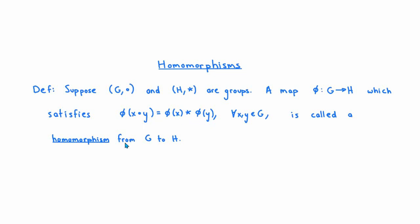In other words, phi is a homomorphism if whenever you combine two elements in G using the binary operation in G and then map them to H using phi, you get the same answer as if you had mapped the original two elements to H and then combined them using the binary operation in H. Remember that the order of combining elements on both sides of this equation matters in general, because we're not assuming that G and H are abelian.